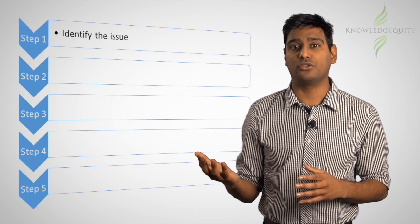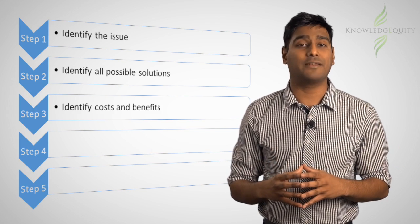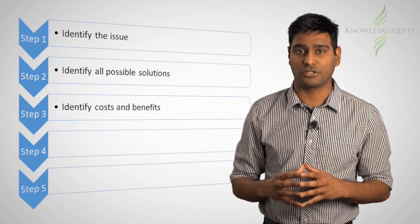There are five steps when applying the utilitarian approach. These include identification of the issue or problem, possible solutions or actions, as well as costs and benefits associated with each possible action.